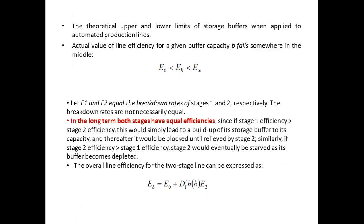For the theoretical upper and lower limits of storage buffer capacity applied to automated production lines, the actual line efficiency for a given buffer capacity b falls somewhere in the middle. Let f1 and f2 be the breakdown rates — meaning the frequency of breakdowns — for stages one and two respectively. The breakdown rates are not necessarily equal for both stages.